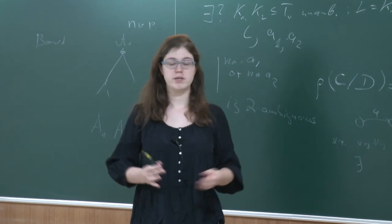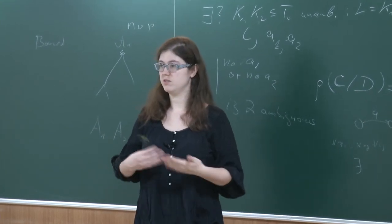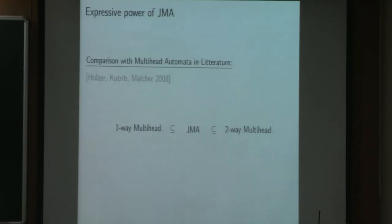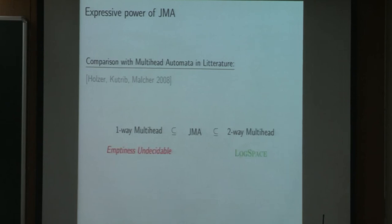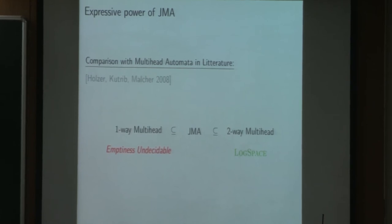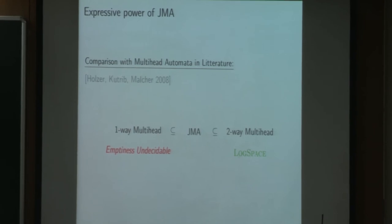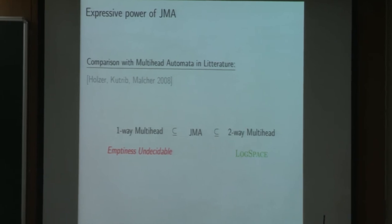But how can we place this class of language in the known literature? So we can compare our model of automaton with the models that are in the literature. Usually multi-head automata are either heads that can only go from left to right, or heads that can go either from left to right or from right to left, which are called respectively one-way multi-head automata and two-way multi-head automata. Our model is located between those two. What consequence we can derive is that the emptiness is undecidable, and that the languages we are recognizing is inside log-space, because it is well known that the two-way multi-head automata recognize exactly the log-space.